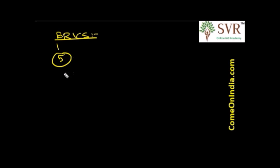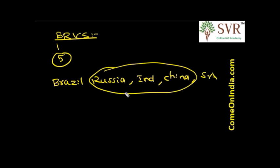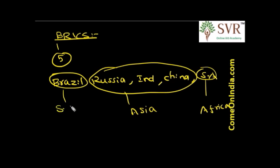Let's discuss about BRICS nations and its importance. BRICS stands for five emerging countries: Brazil, Russia, India, China and South Africa. From the continental perspective, three countries are from Asia, one country is from Africa, and another country is from the South American continent. No country is from North America or the European continent.